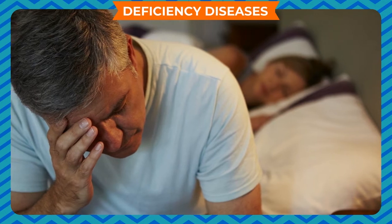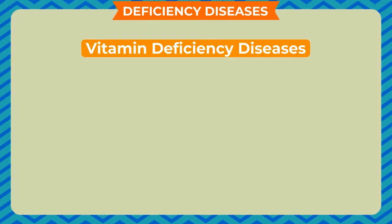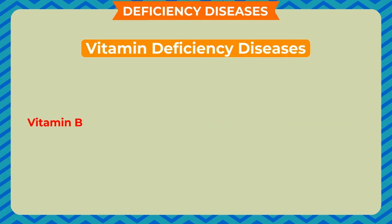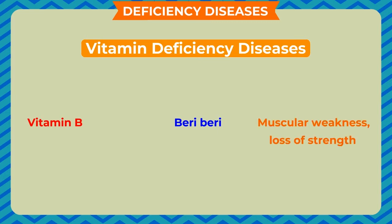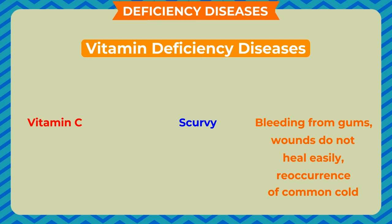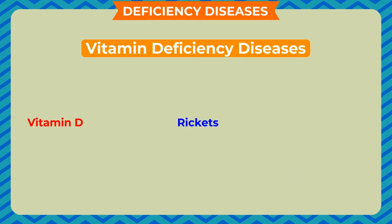Vitamin deficiency diseases: deficiency of Vitamin A causes night blindness and xerophthalmia, with symptoms of poor night vision and complete blindness. Deficiency of Vitamin B causes beriberi, with symptoms of muscular weakness and loss of strength. Deficiency of Vitamin C causes scurvy, with symptoms of bleeding from gums, wounds that do not heal easily, and recurrence of common cold. Deficiency of Vitamin D causes rickets, with symptoms of bones becoming soft and deformed.